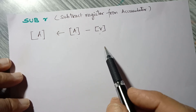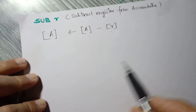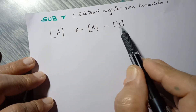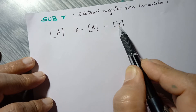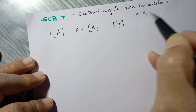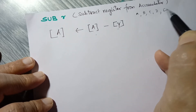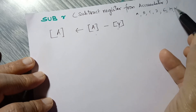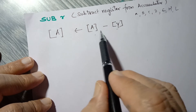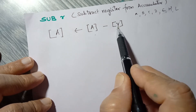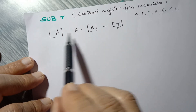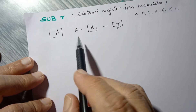In subtraction, R can be anything — it is the CPU register. It can be accumulator, register B, C, D, E, H, and L. Any CPU register can be used here. Even you can use the accumulator also, so the accumulator will get subtracted from the accumulator and the result will be placed into the accumulator.